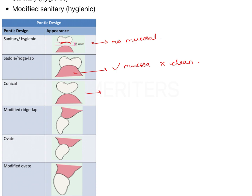Conical has mucosal contact and is easy to clean. Modified ridgelap has mucosal contact and is easy to clean. Ovate has mucosal contact and is easy to clean. Modified ovate also has mucosal contact and is easy to clean.